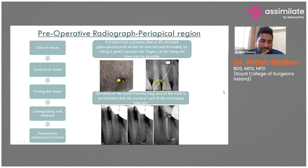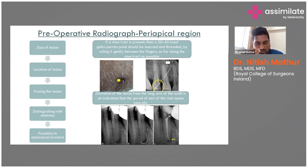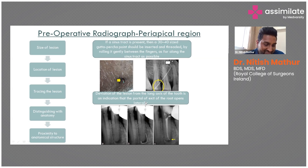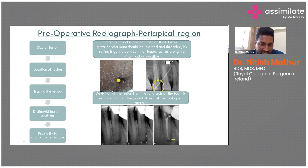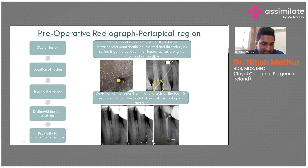You need to assess the periapical region systematically: first the crown, then the pulp chamber, then the canal outline, then the root outline, and finally the periapical region — though our eyes tend to go there first, it should be assessed last. In the periapical region, evaluate the character of the periapical radiolucency — whether it is cystic or an abscess — and also check the size of the lesion.